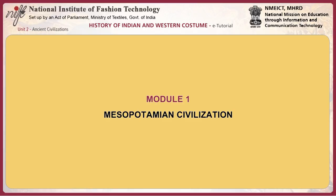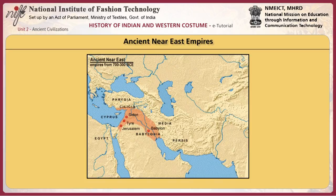The first module focuses on Mesopotamian costume and culture. Mesopotamian civilization existed between 3500 BCE and 300 BCE. The region centered between the Tigris and Euphrates rivers in modern-day Iraq. The two rivers encouraged commercial contacts which developed into an international trading network.